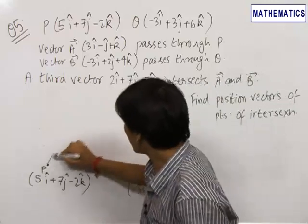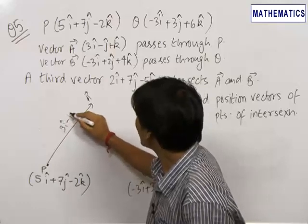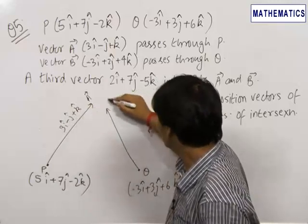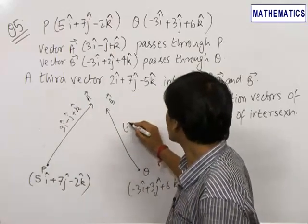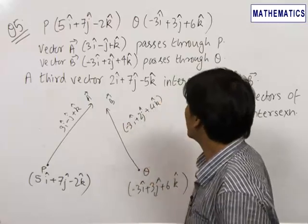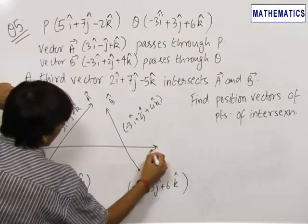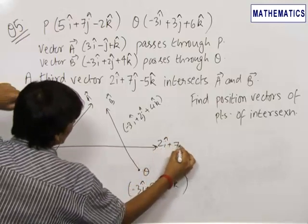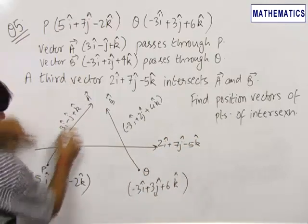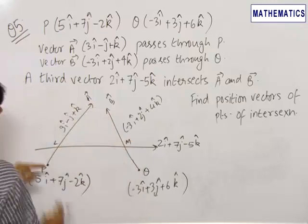There is a vector passing through point P — let this be vector A, given as 3i − j + k. There is another vector B passing through point Q, which is −3i + 2j + 4k. It is also given that a third vector 2i + 7j − 5k intersects these two lines passing through points P and Q respectively.